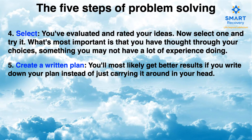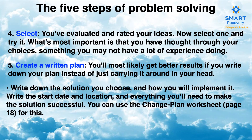Number five: create a written plan. You'll most likely get better results if you write down your plan instead of just carrying it around in your head. Write down the solution you choose and how you will implement it. Write the start date, the location, and everything you'll need to make the solution happen and be successful. You can use the change plan worksheet on page 18 in the SMART Recovery Handbook for this.